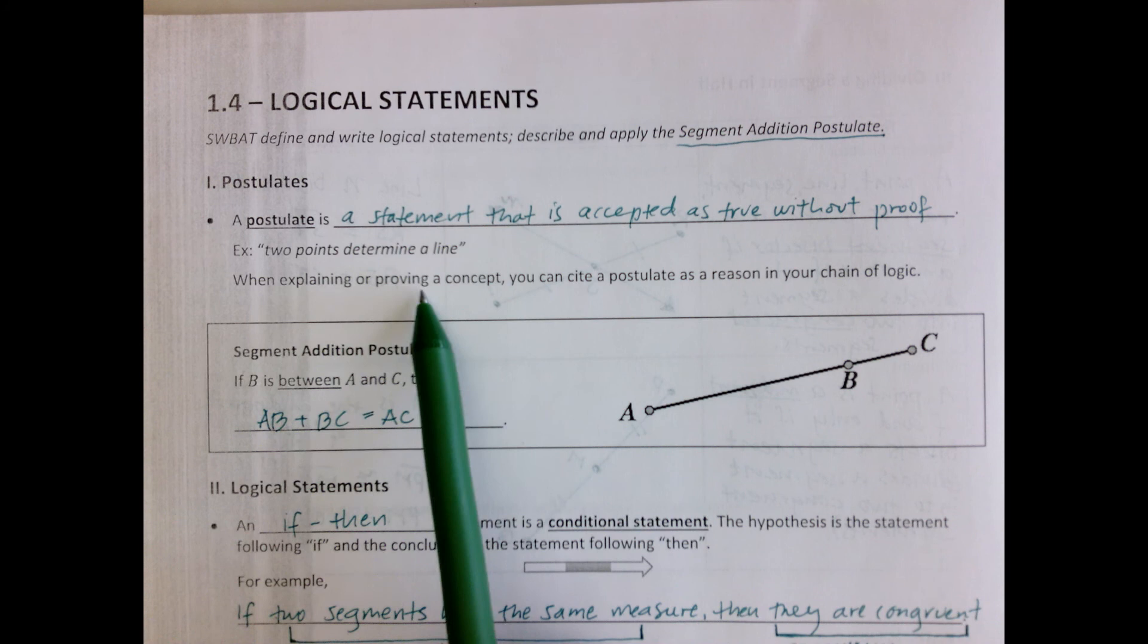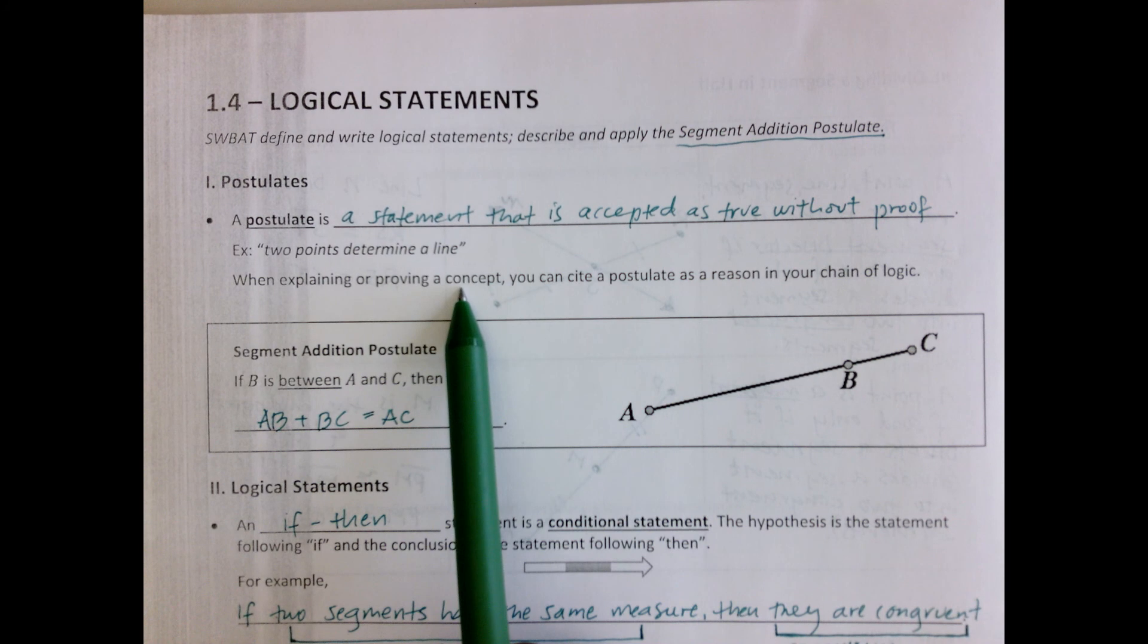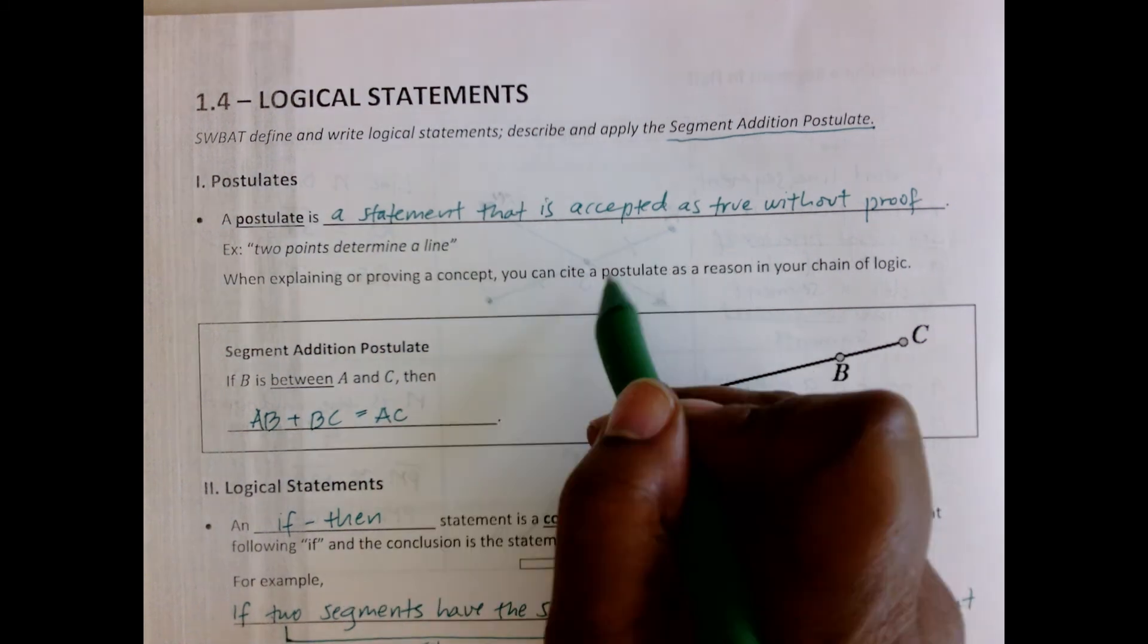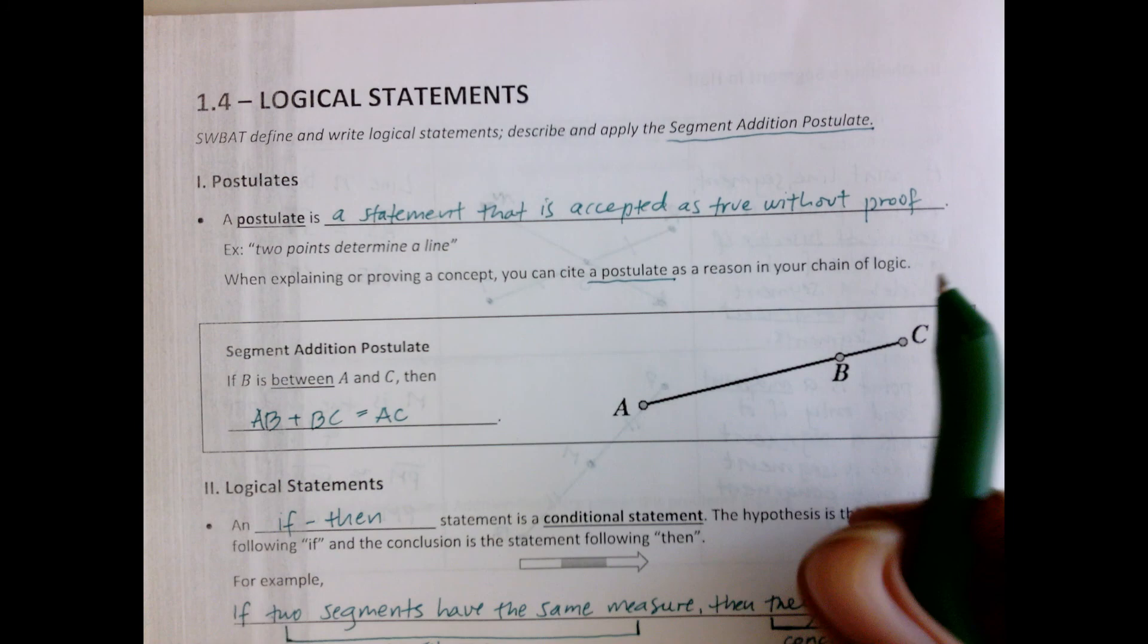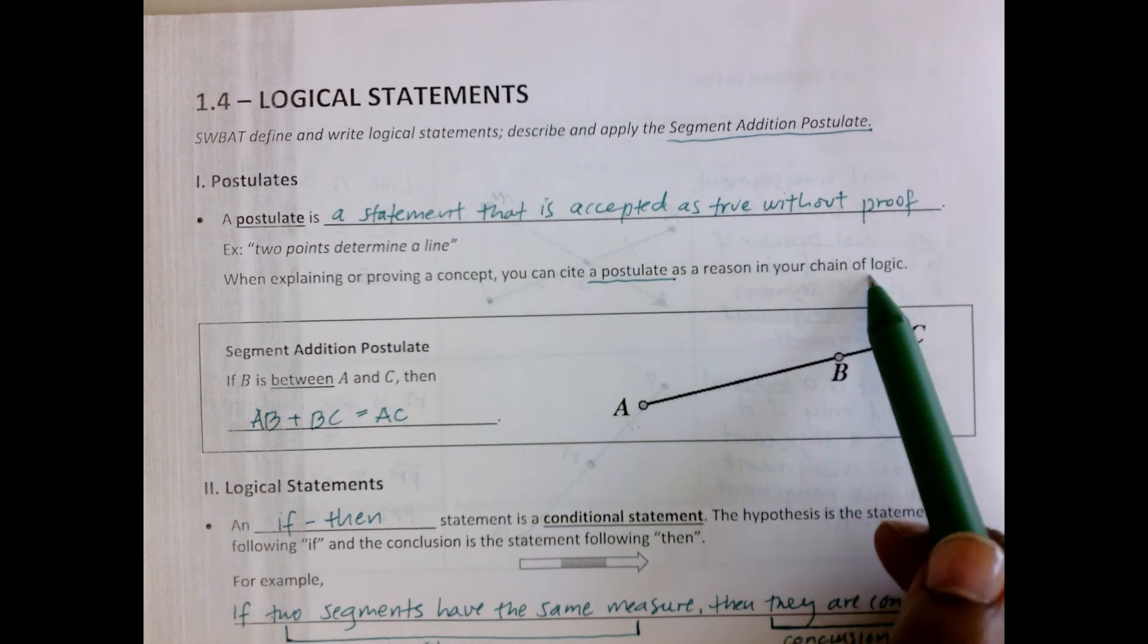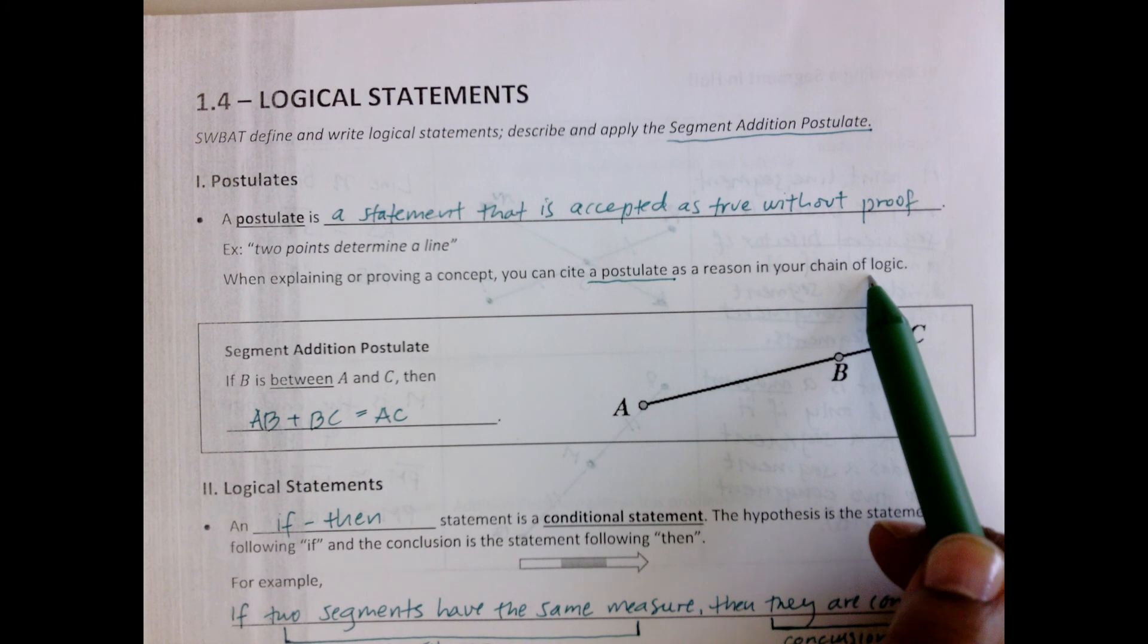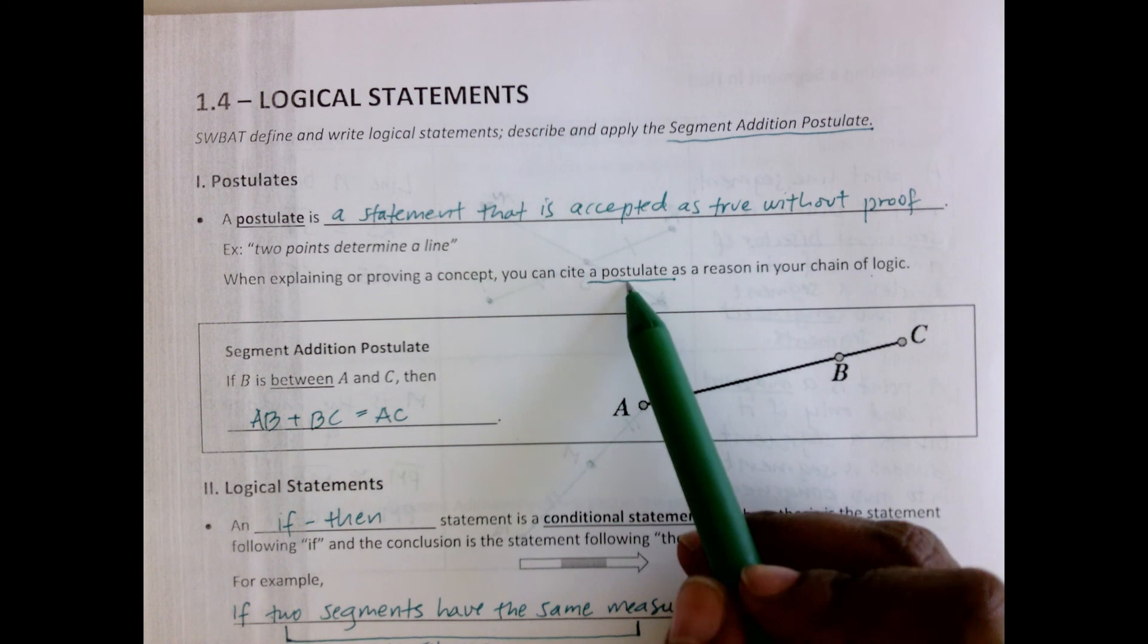When you're explaining or proving a concept, like you're writing a proof, which we will begin doing very soon, you can cite a postulate as a reason in your chain of logic. And that's what a proof is. It's basically a chain of logic. And it's actually pretty fun to do if you have a sense of how to use postulates.